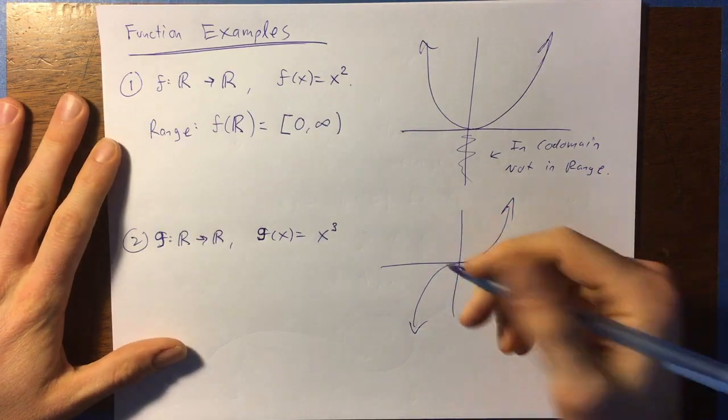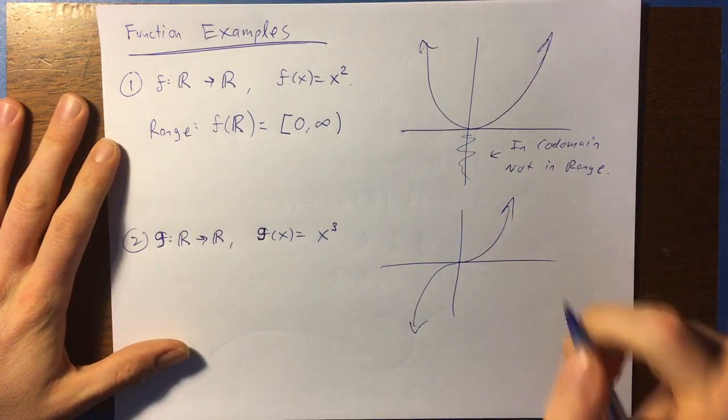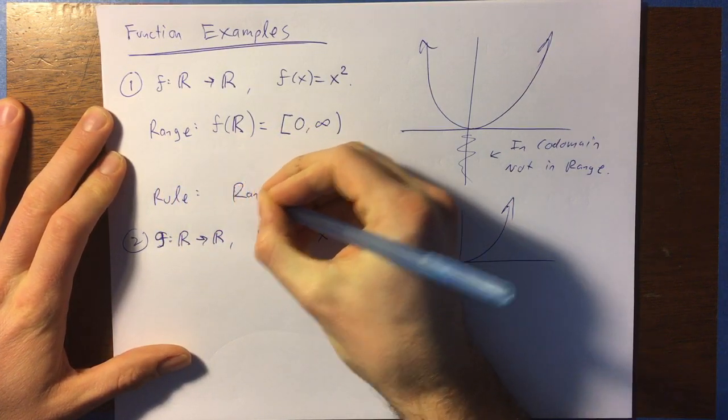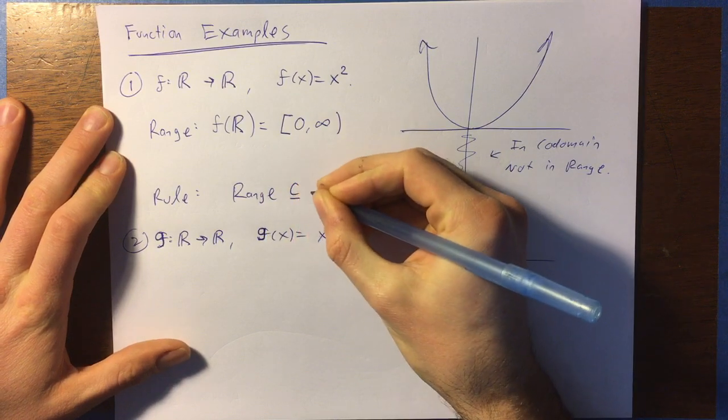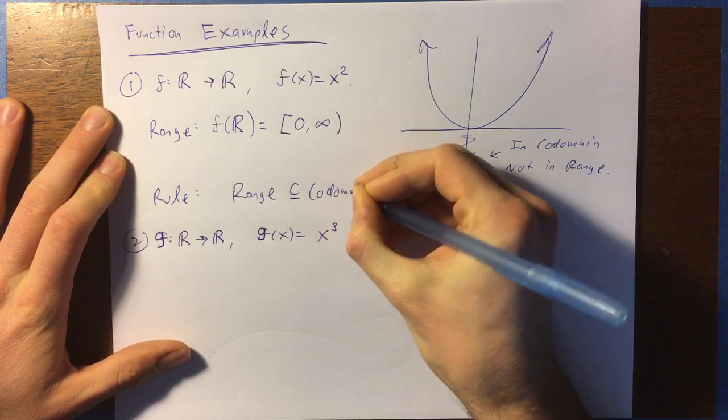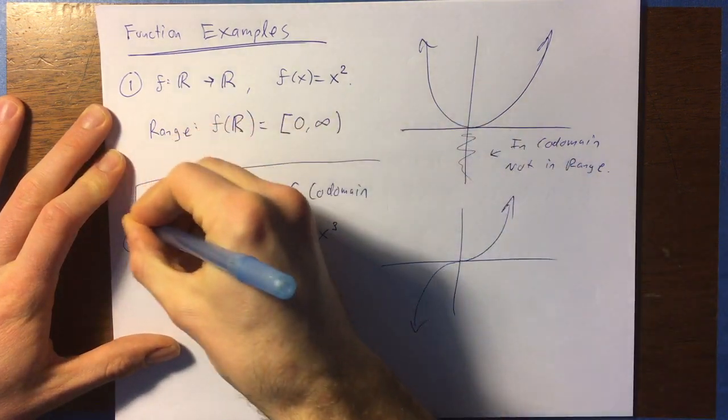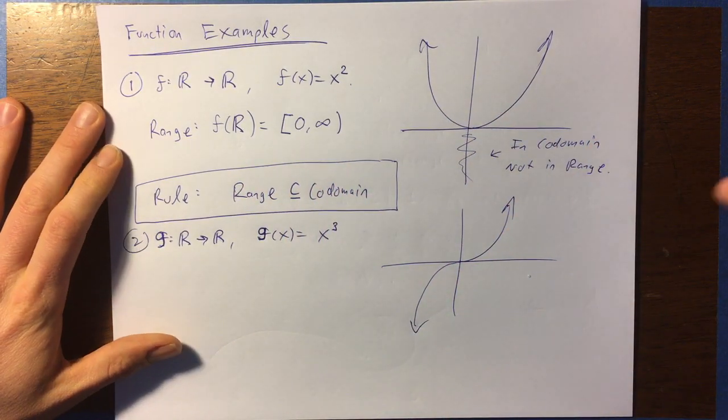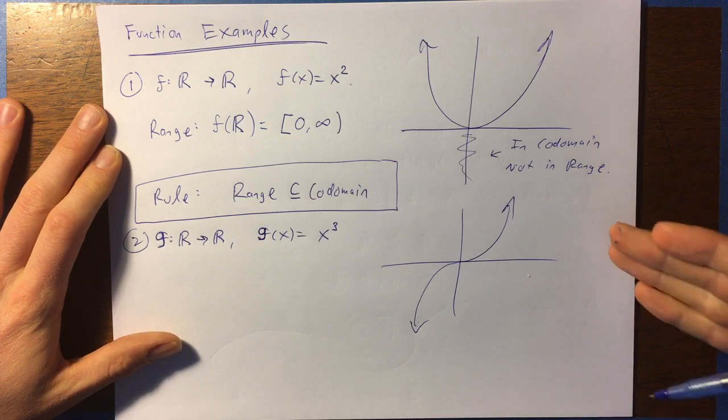So, so yeah, that's the idea here. Now, one rule that you've got to keep in mind here is that the range is always going to be a subset of the codomain. Okay, the codomain has to include all of the possible outputs. You can't have outputs that aren't in the codomain, but you can have elements of the codomain that aren't outputs.